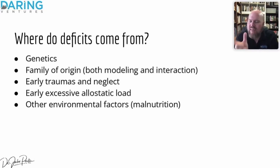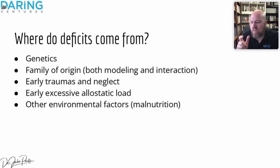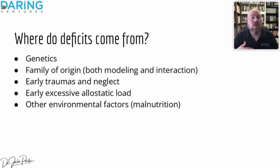That lack of mirroring — because mom was focused on Maslow's hierarchy of needs, trying to get food on the table, which was absolutely a life-and-death issue — is going to cause a deficit. Being mirrored as an infant and as a child is a huge part of our development and in developing capacities for something called theory of mind, which is necessary for empathy. We're actually going to talk about that here in a little bit.